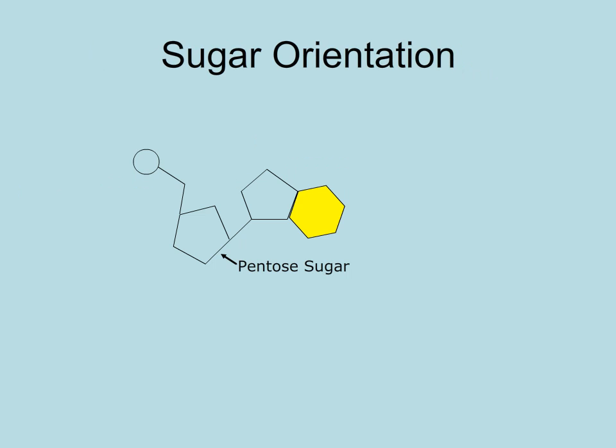And if you will recall, the pentose sugar has an orientation based on its carbons. The 3' carbon and the 5' carbon are on opposite sides of the nucleotide molecule. The 5' carbon is closest to the nucleotide's phosphate group.